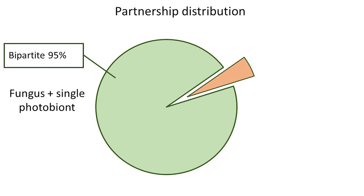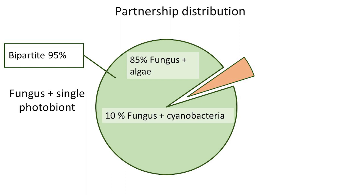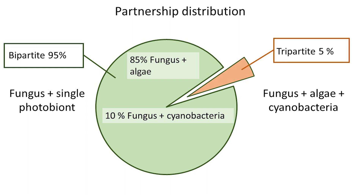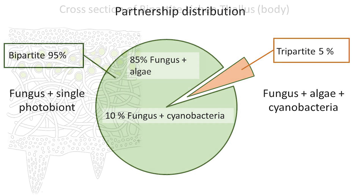The most common photosynthetic partner is alga, found in around 85% of lichens. The remaining 10% of bipartite lichens have a cyanobacterium. A minor portion of lichens are tripartite, meaning the fungus makes partnerships with both algae and cyanobacteria at the same time.